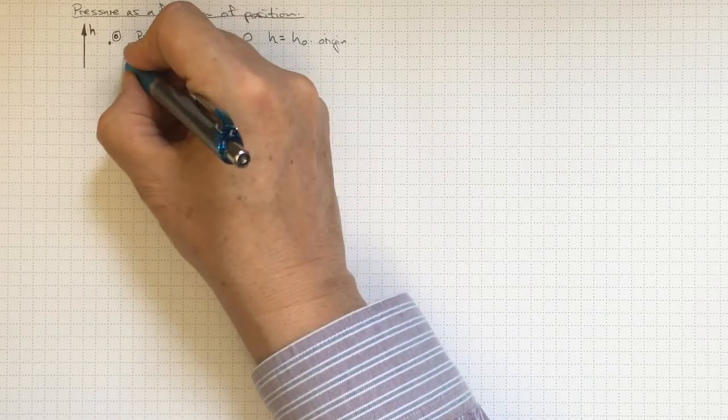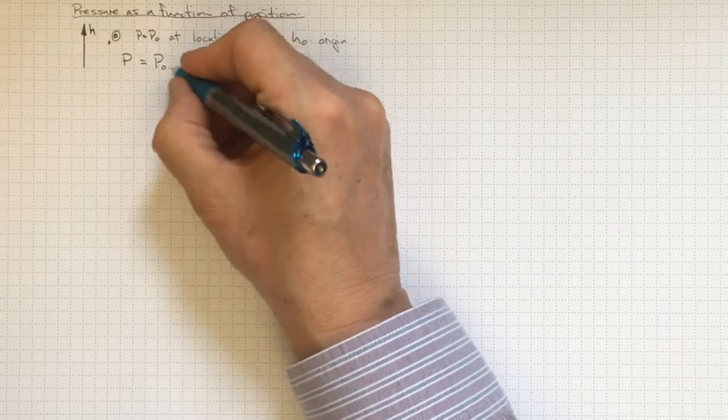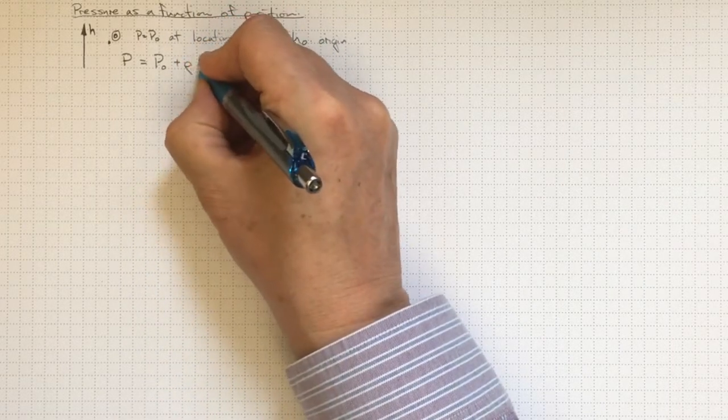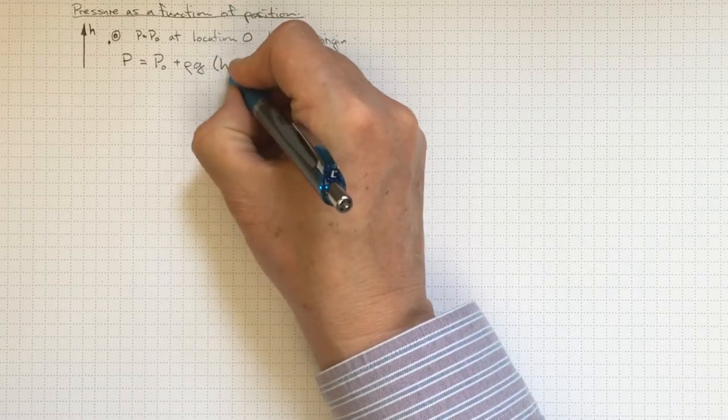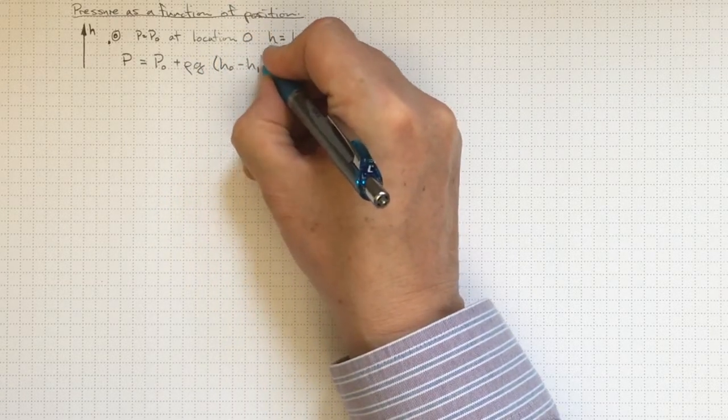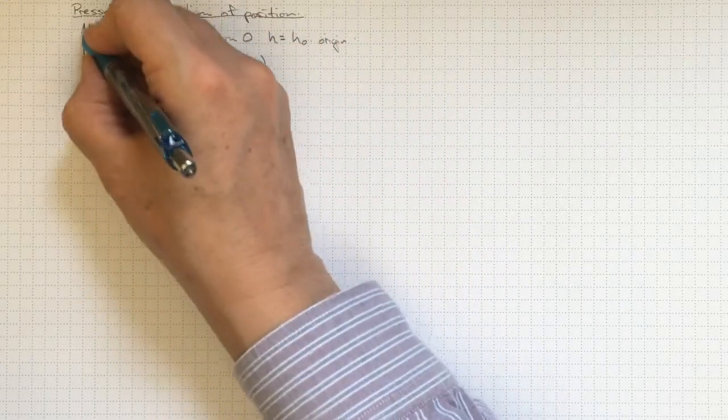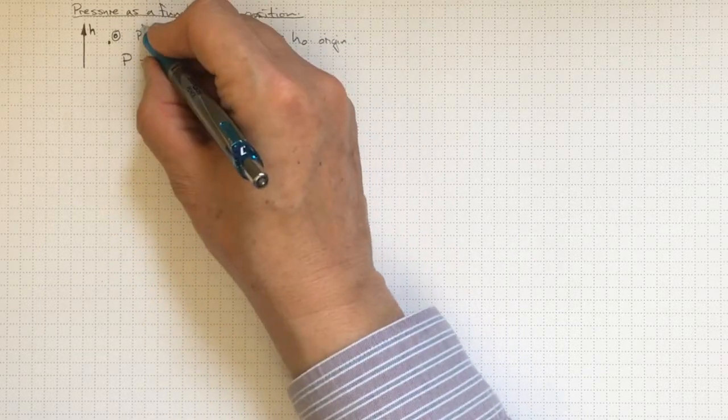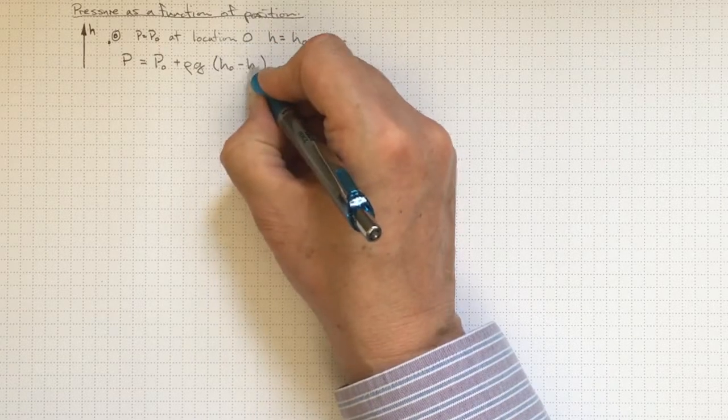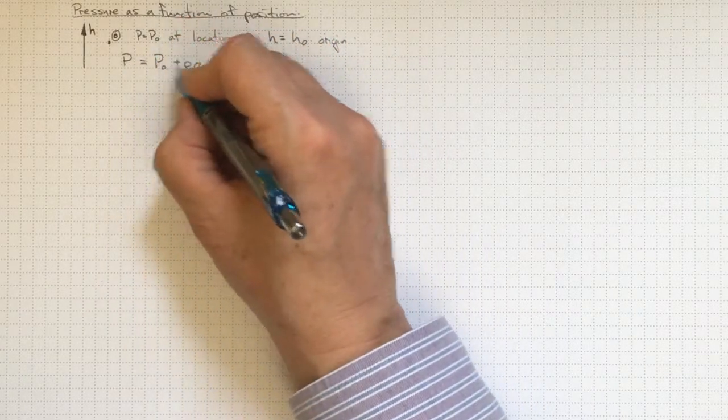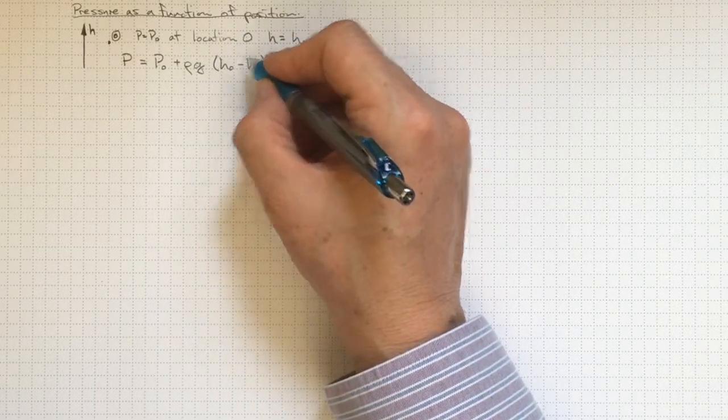Then we can write that the pressure at any other location is equal to the pressure at the origin plus density times gravity, assuming we're working always in the same continuous fluid, of h-naught minus h. So what that says is if h is higher than h-naught, then I'm going to get a lower pressure, because h will be bigger than h-naught, so that'll be negative.